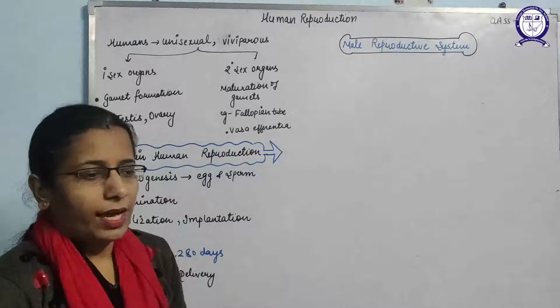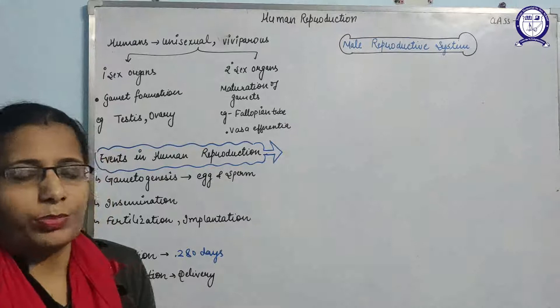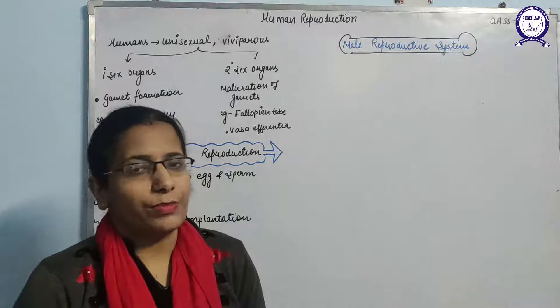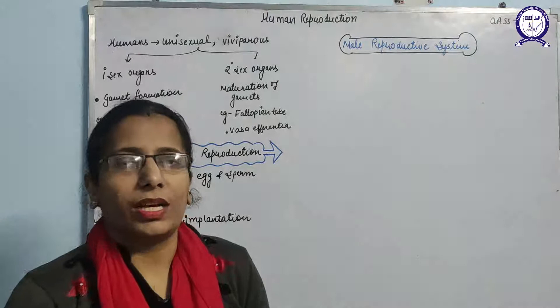Human beings have two types of sex organs: primary sex organs and secondary sex organs. Primary sex organs are the organs where gamete formation actually takes place. Gamete formation takes place in the gonads, and the gonads are known as the primary sex organs — that is, testis in the male and ovary in the female.